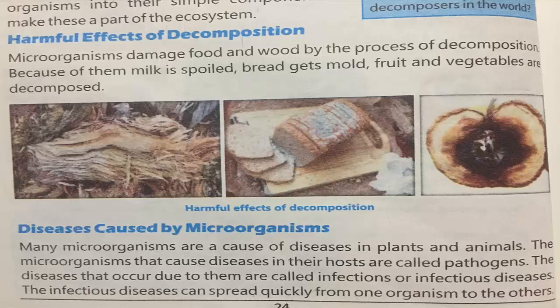Microorganisms damage food and wood through the process of decomposition. Because of them, milk is spoiled, bread gets mold, and food and vegetables are decomposed. In these pictures you can see: in the first picture, the wood is damaged by microorganisms; the milk is also spoiled by bacteria. In the second picture, you can see that bread is damaged by microorganisms and gets mold.